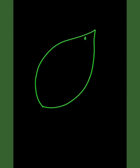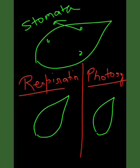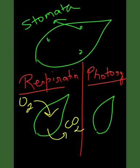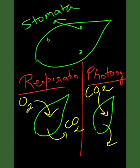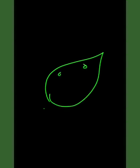Leaves are also the site for exchange of gases during respiration and photosynthesis. Openings present on the underside of leaves are called stomata, through which gaseous exchange takes place. During respiration, oxygen is taken in and carbon dioxide is given out. During photosynthesis, the opposite occurs — carbon dioxide is taken in and oxygen is released as a by-product.